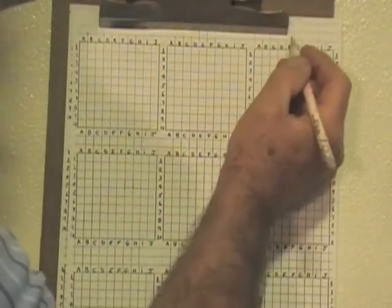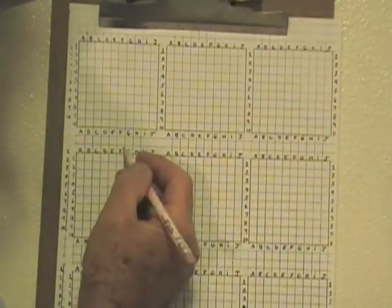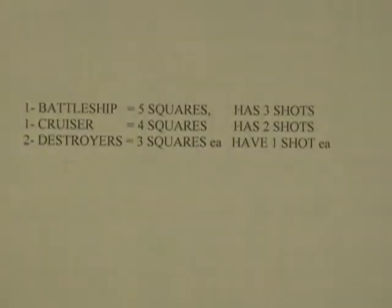And if you have two opponents, you put another name there, and three opponents, another name there. This was the layout that we used. You can use anything you want, but this is what we did.